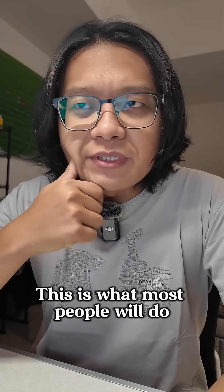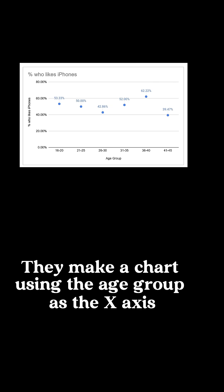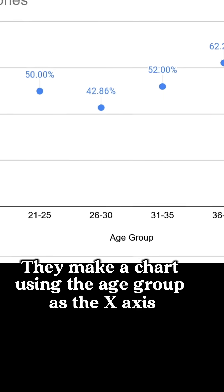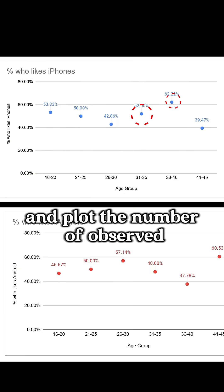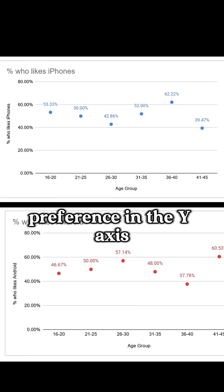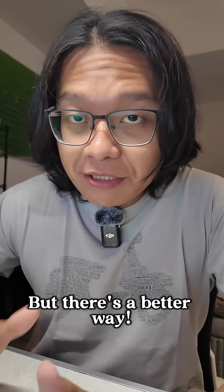This is what most people will do, and honestly it's not the best way. They make a chart using the age group as the x-axis and plot the number of observed preference on the y-axis, and then they draw the trend line. But there's a better way.